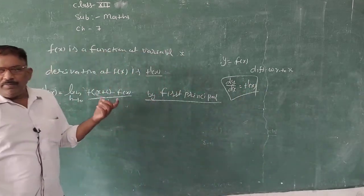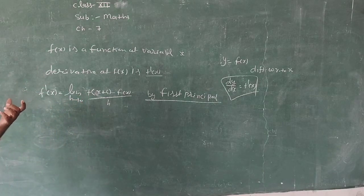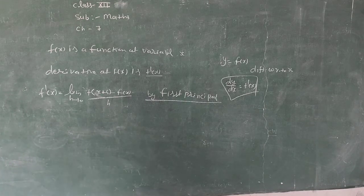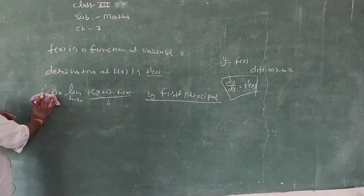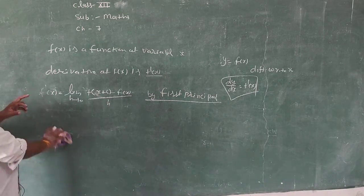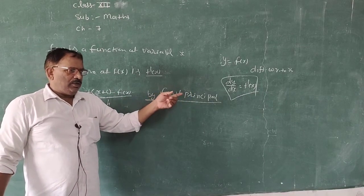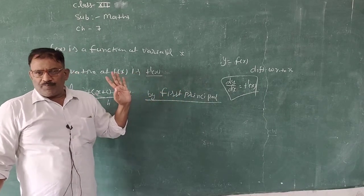We have to do it directly — it is formula-based. We need to identify the function first, and we have 17 to 20 formulas. Keep in mind the variable: if variable is x then find dy/dx, if it is t then dy/dt — differentiation will be with respect to the variable given in the question.